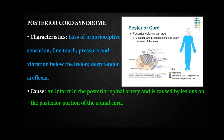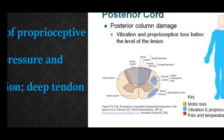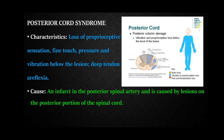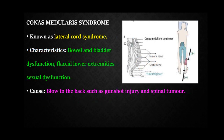Posterior cord syndrome involves damage to the dorsal columns, which deal with deep touch, proprioception, and vibration. There will be loss of proprioception, fine touch, pressure, and vibration below the lesion, as well as deep tendon areflexia. It is mainly caused by infarction of the posterior spinal artery or lesions on the posterior horn of the spinal cord.